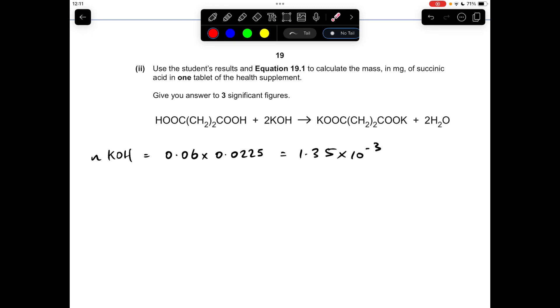So we now apply the mole ratio in the equation to work out how many moles of acid must have been present in the 10 centimeters cubed used in the titration. So that comes out at 6.75 times 10 to the minus 4 from the 2 to 1 ratio.